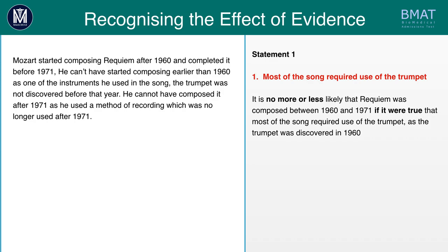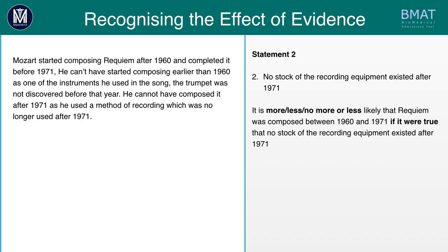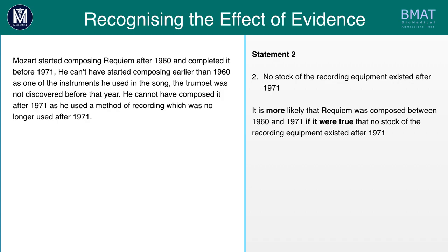Statement two: we find out if it's more, less, or no more or less likely that Requiem was composed between 1960 and 1971 if it were true that no stock of the recording equipment existed after 1971. The fact that no stock existed after 1971 means it is very unlikely he recorded after that date. Therefore, it's more likely Requiem was composed between those dates, since he had to use the equipment while stock existed. This, therefore, does strengthen the argument.